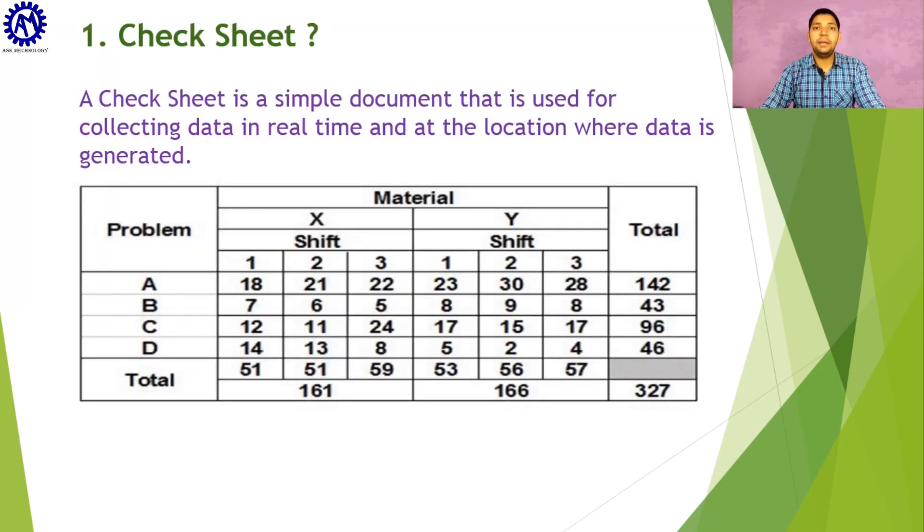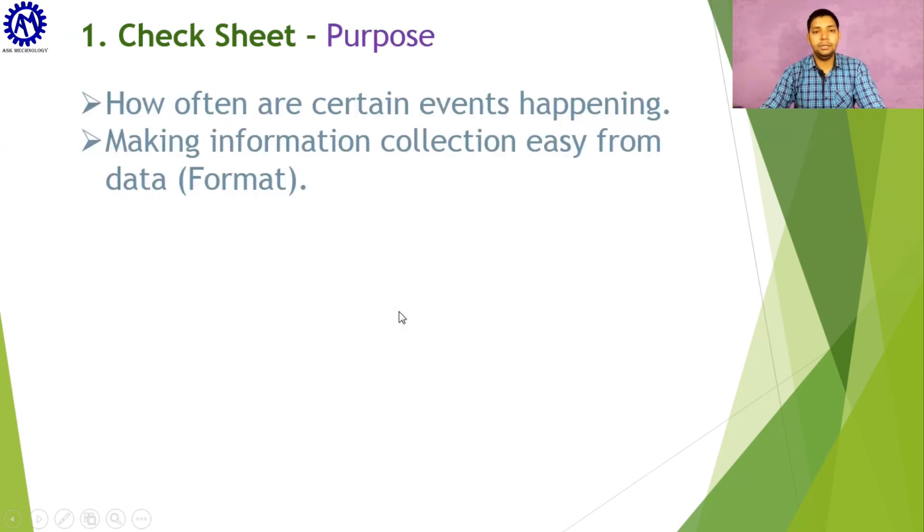First, let's discuss the check sheet. Check sheet is a simple document used for collecting and recording data in real time at the location where data is generated. For example, a check sheet is given here in which a material or part is produced in X and Y shifts, and ABCD are the problems or defects generated during production. These defects occur in several frequencies within time intervals.